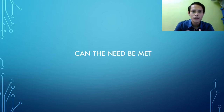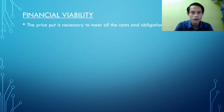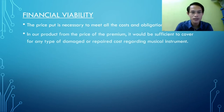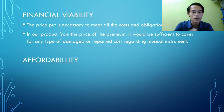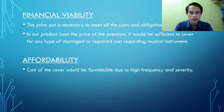Next — can the need be made? The first aspect is financial viability. The premium price is necessary to meet all costs and obligations. From the premium price, it would be sufficient to cover any type of damage or repair costs regarding musical instruments. The second aspect is affordability. The cost of cover could be formidable due to high frequency and severity — for example, if one of the musical instruments in a band is damaged, the cost to repair it will be expensive.